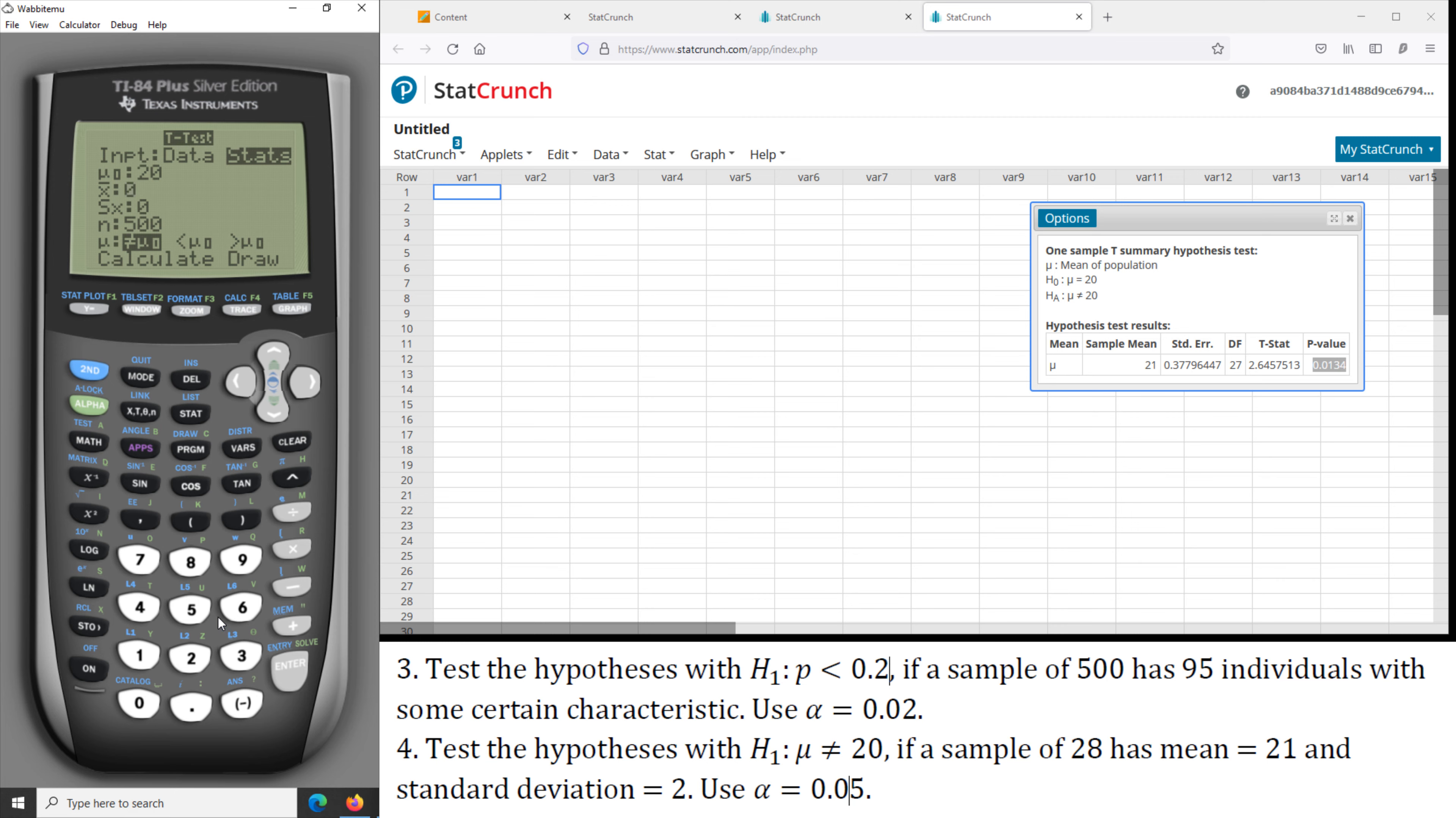And the sample has the mean equal to 21, the standard deviation of 2, and the sample size of 28. And we compute or calculate. And we have the P-value of 0.0134, which is the same as what we have on StatCrunch. Thank you for watching.